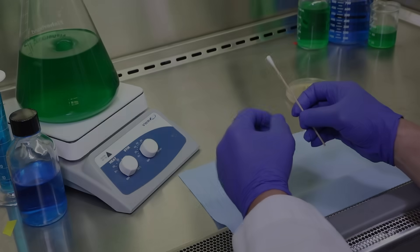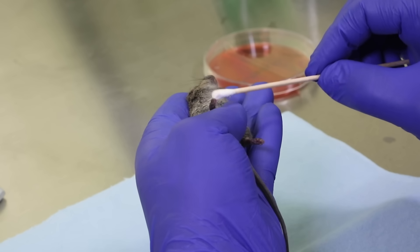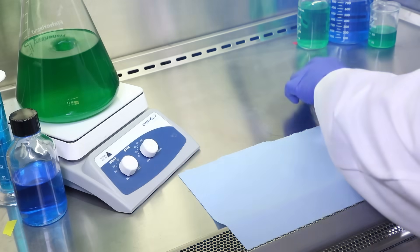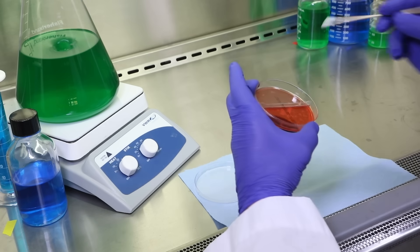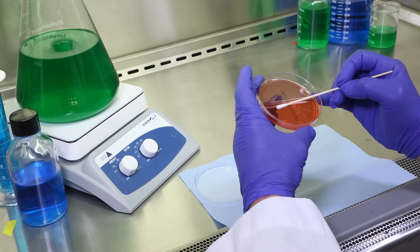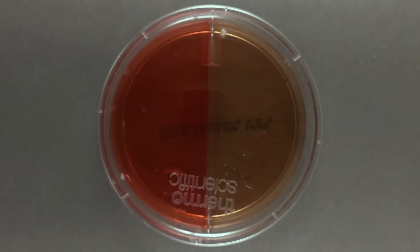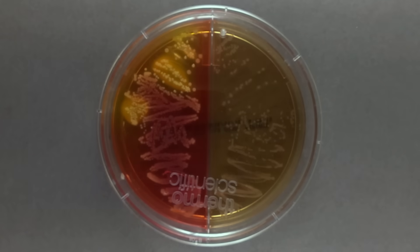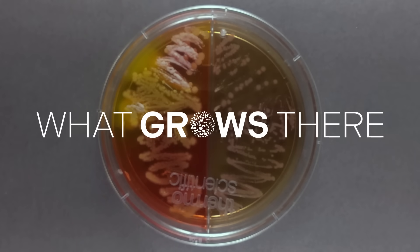To collect samples, our team of scientists swabbed the mice, focusing on areas that can easily pick up germs like their feet and bellies. From here, the sample is transferred to an agriplate, where the bacteria can incubate. Our samples are ready to go. Now it's time to see what grows there.